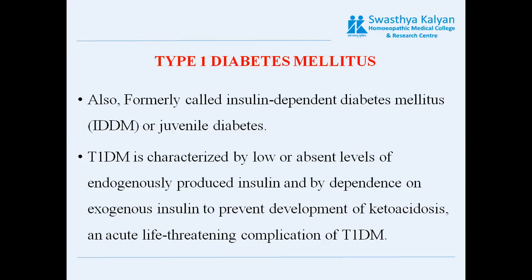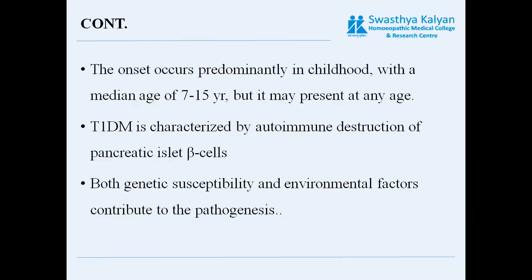The onset of Type 1 diabetes predominantly occurs in childhood, with a median age of 7 to 15 years. This age group is the most common, though it may present at any age.